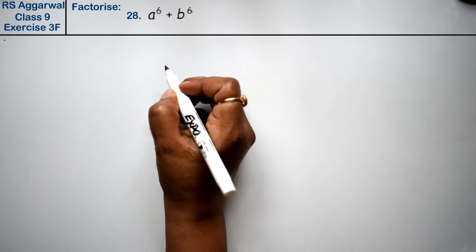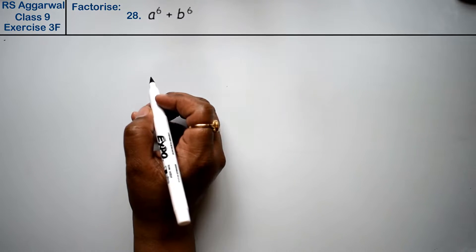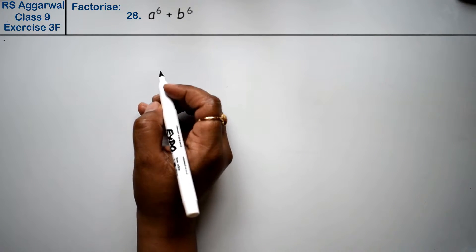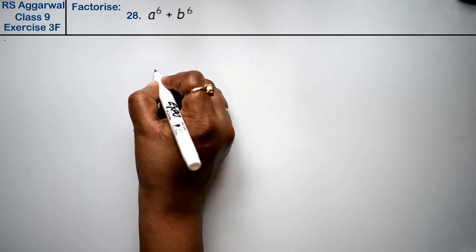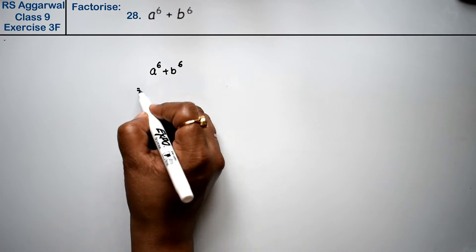Let's do question number 28 of exercise 3F, that is factorization of polynomial. Question number 28 is a^6 plus b^6. Friends, how can we write this?